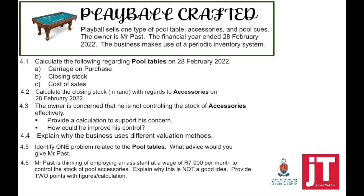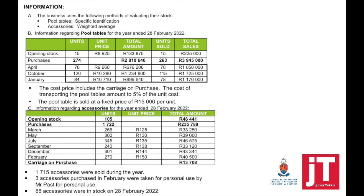Looking at the information given to us, the business uses the following methods to value their stock: pool tables use specific identification, and accessories use weighted average. This is an activity where we look at two different items valued using these two different methods.